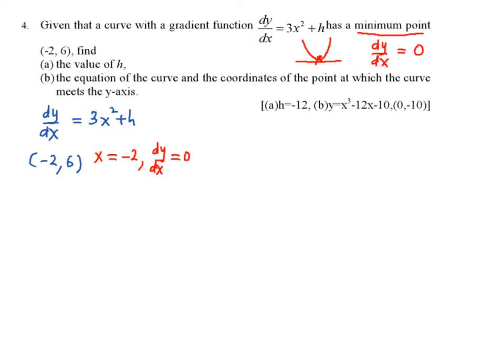So if you have this relationship, you can substitute dy/dx as 0. And you substitute x as negative 2. Therefore, you find the value of h, which is equal to negative 12. So this is part A.